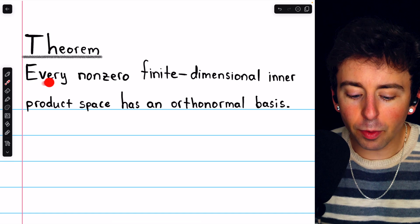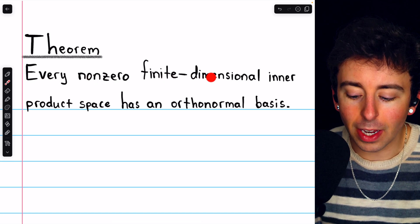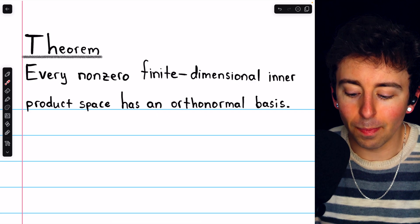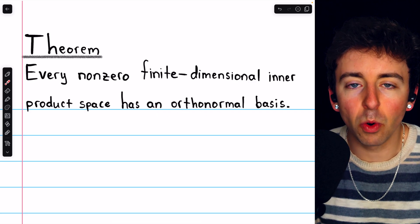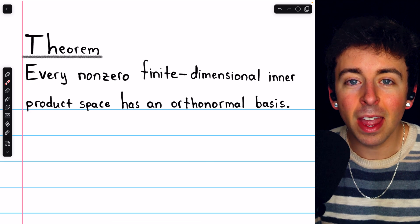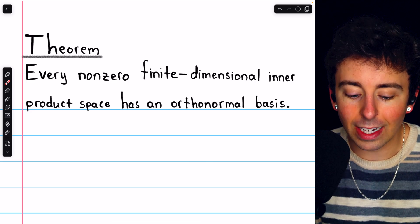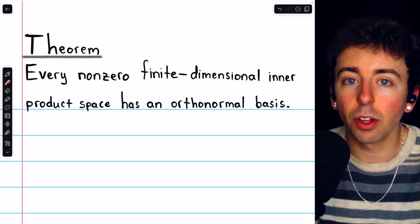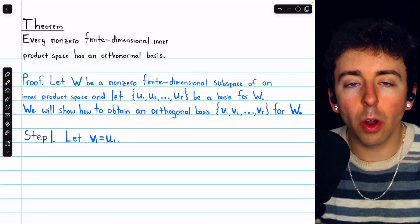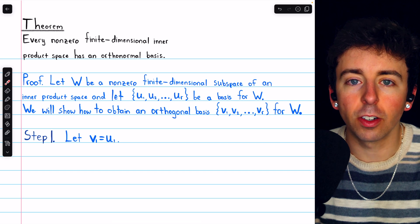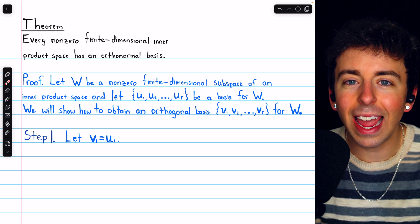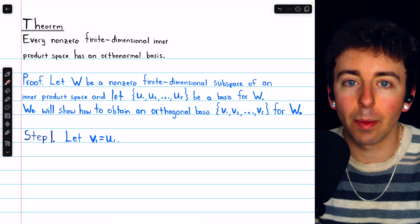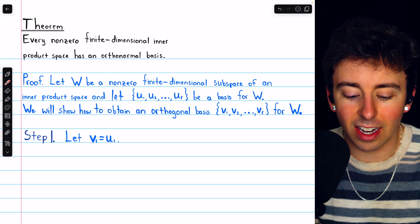Now, the theorem: every non-zero finite dimensional inner product space has an orthonormal basis. An orthonormal basis is a very nice thing, and we're going to prove that for any non-zero finite dimensional inner product space, there is an orthonormal basis. The proof is going to be a step-by-step construction showing exactly how to obtain such a basis. The process outlined in this proof is the Gram-Schmidt process.